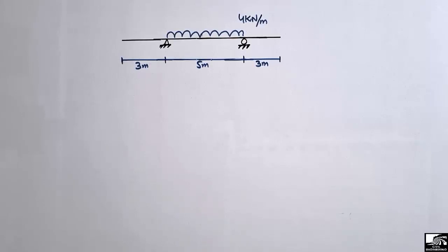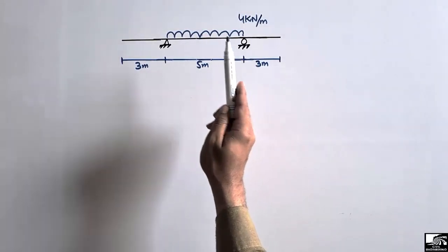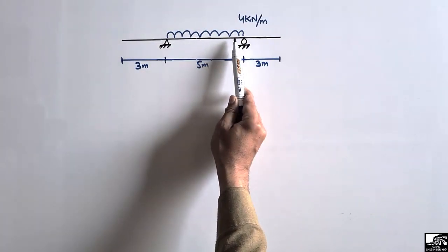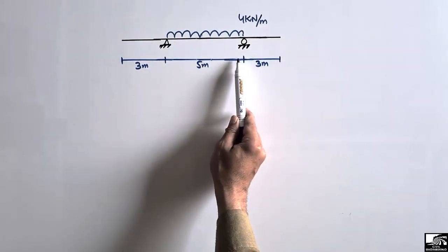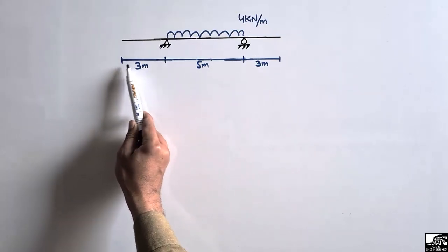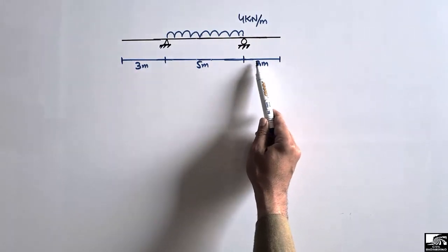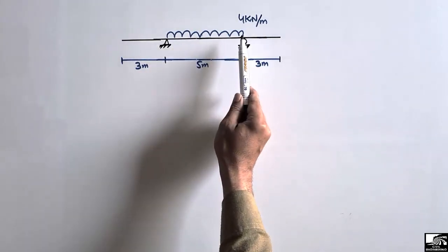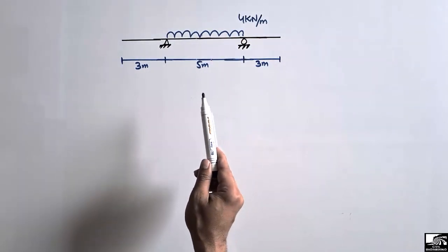Welcome back to AC1 Engineering YouTube channel. In today's lecture we are going to analyze an overhanging beam. There is a uniformly distributed load acting on only the center part of the beam, with a load magnitude of 4 kN per meter distributed over a length of 5 meters, while the 3-meter portions at each end of the overhanging beam are unloaded.